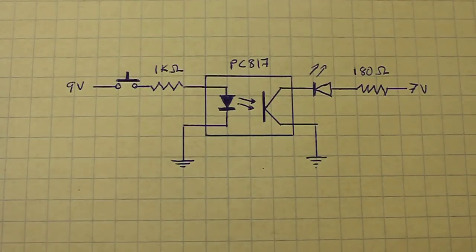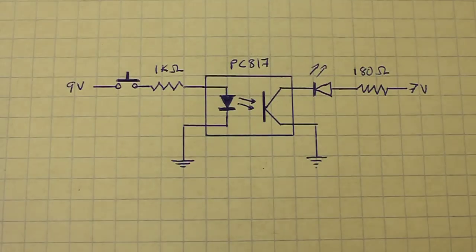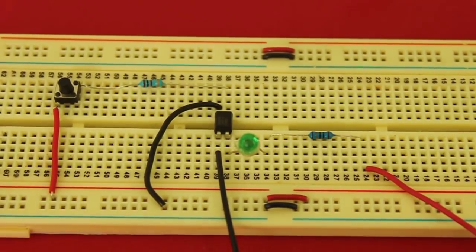This side uses a 9V battery and a power supply at the output side. And the optocoupler that I am using is a very common one, the PC817. And here's the circuit on breadboard.